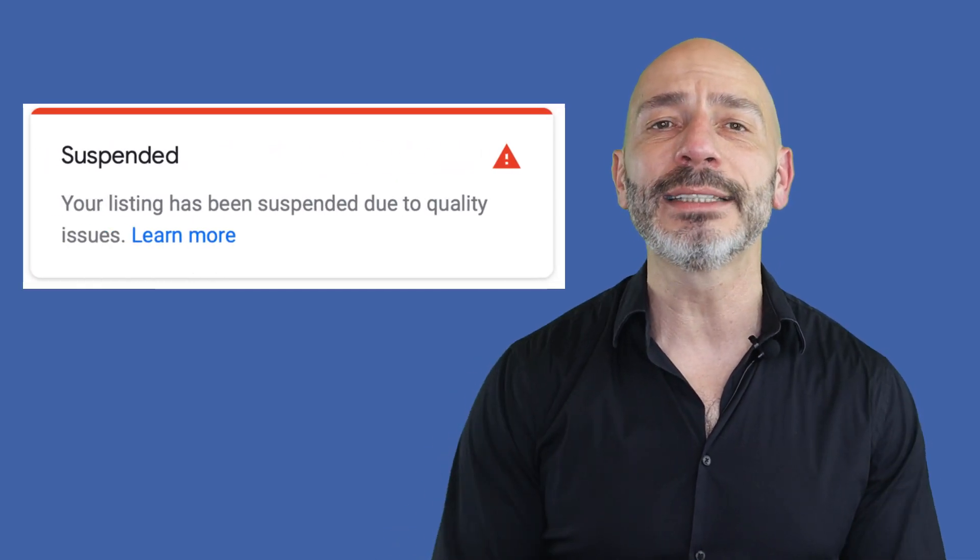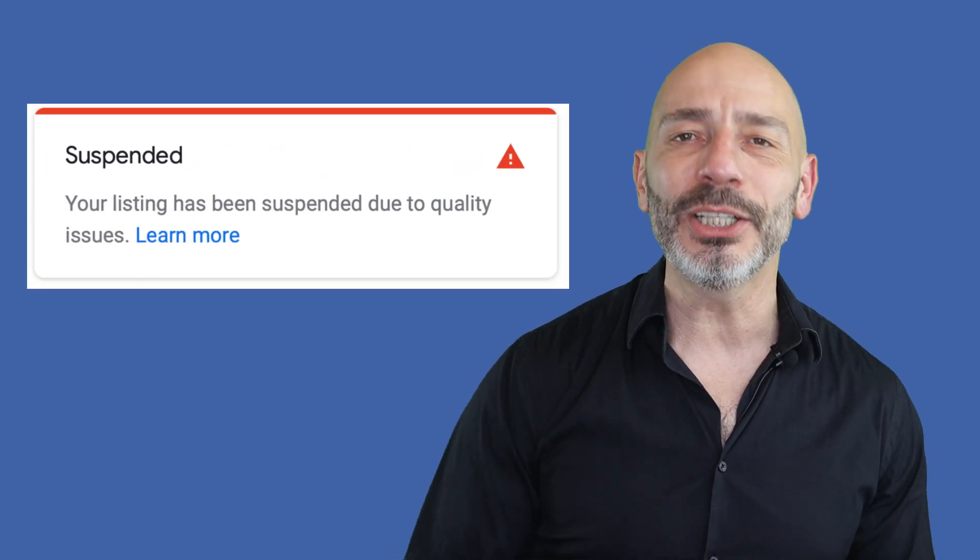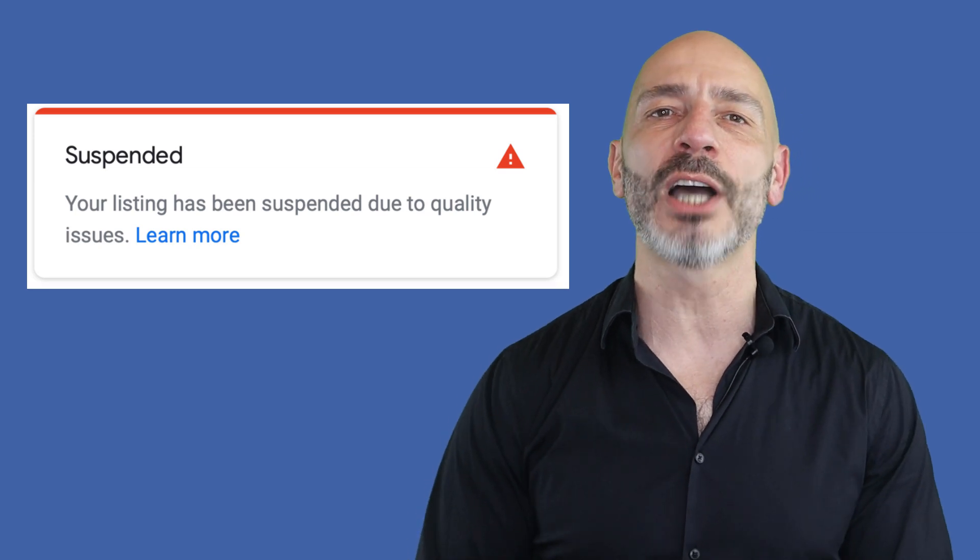One way for Google to fight spammers across local search results is to suspend business listings that seem suspicious or do not stick to Google's guidelines. Even if you've created your listing in good faith, your business could be at risk. I see many business owners create what they think is a legitimate listing but make mistakes along the way, making them vulnerable to a suspension. But not all suspensions are made equal, so let's first have a look at suspension types.